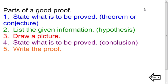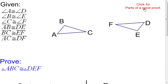I'm going to refresh our memories. The first part is to state what is to be proved — usually a theorem or conjecture in if-then format. Then we list the given information found in the hypothesis. Part three is to draw a picture and mark it up. Part four is to state what is to be proved, found in the conclusion of our if-then statement. And then we write our proof. Keep that in mind as we go through this.